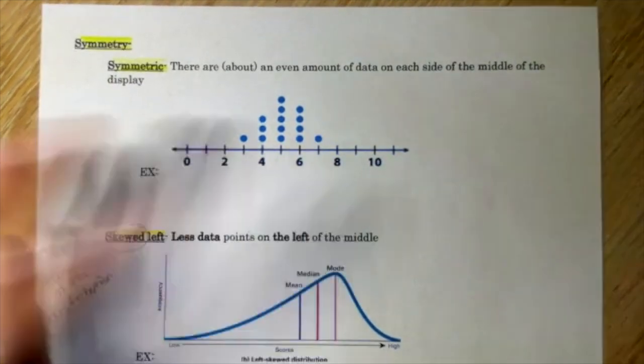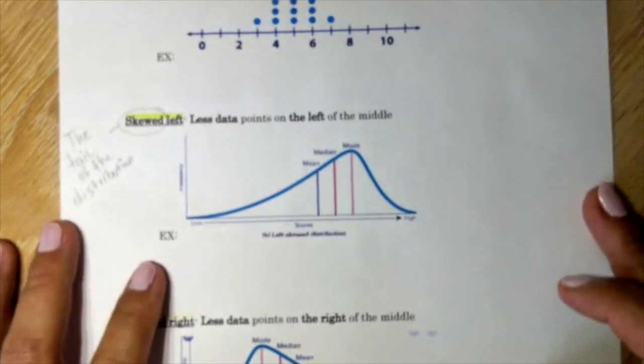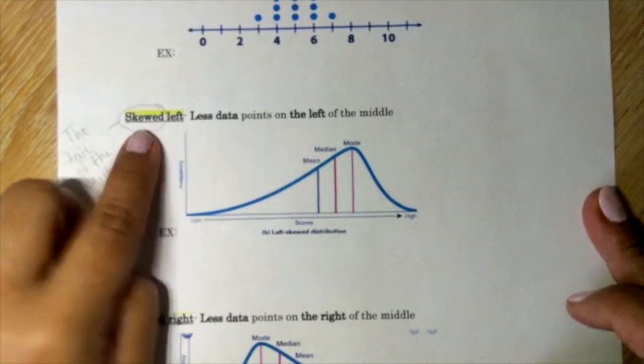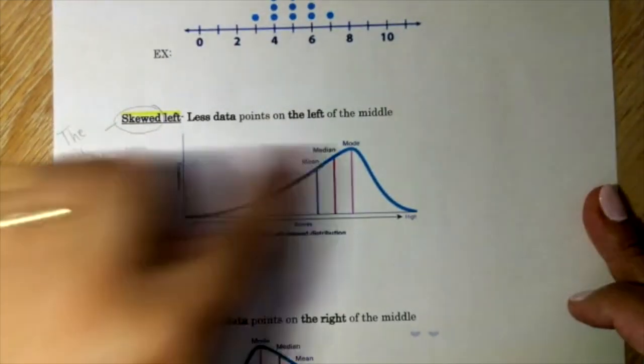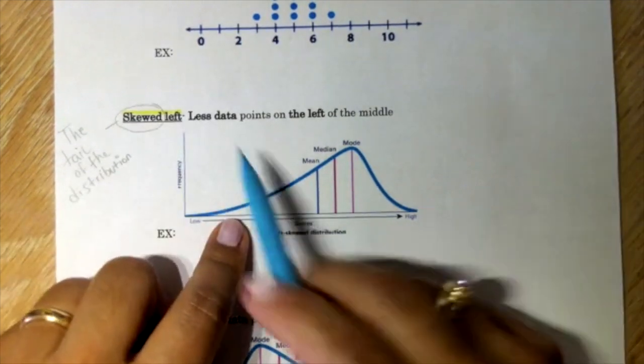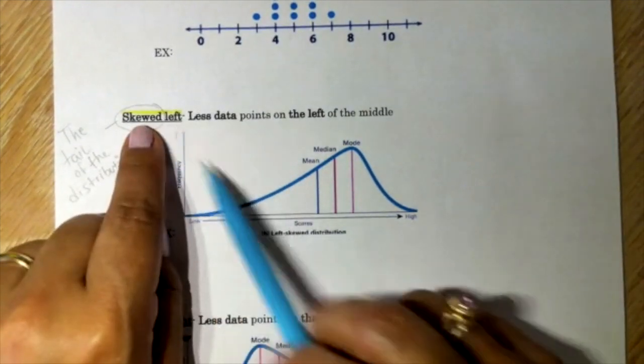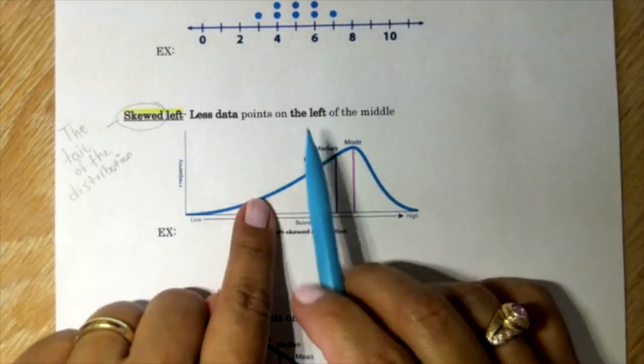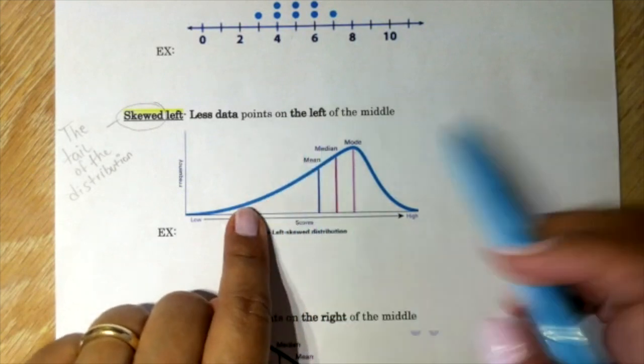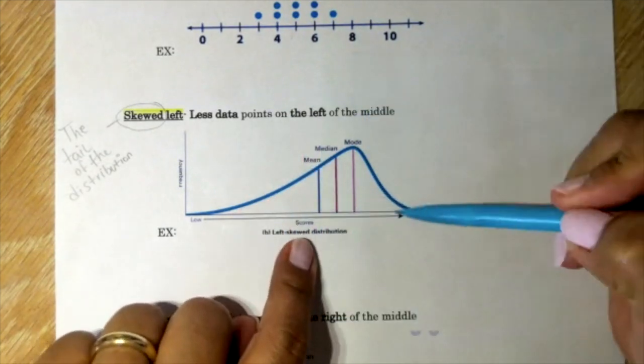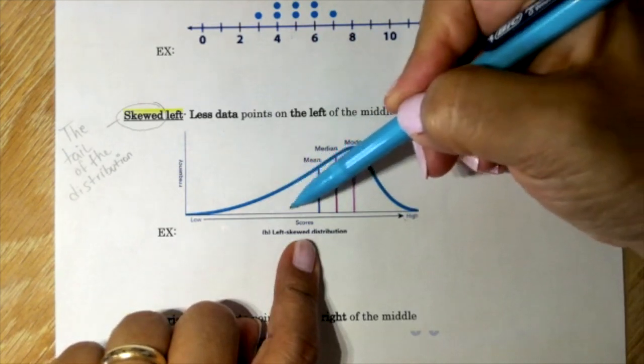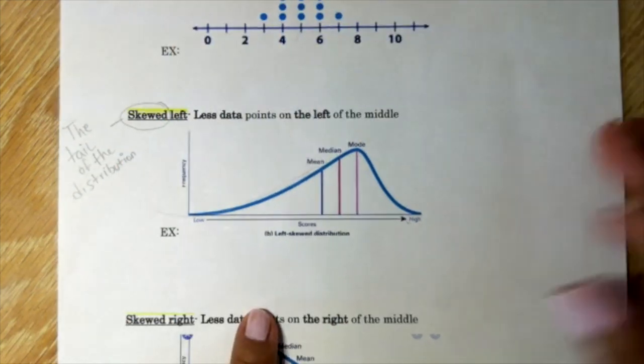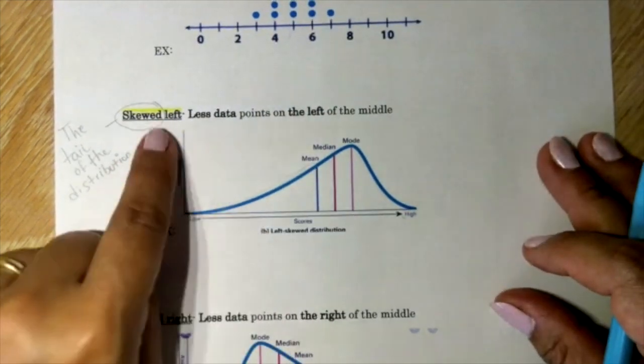The next one is skewed left or skewed left. A skewed means the tail of the distribution. Skewed left, when the distribution looks something like this, less data points on the left of the middle. If you look at it, there's not many points on the left. So it goes like this tail, it goes down.